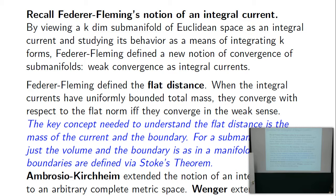We want to apply all this material by taking every pair of Riemannian manifolds, putting them into a common metric space, and measuring a flat distance. But everything Federer-Fleming did was in Euclidean space, which doesn't have enough flexibility. To study metric spaces you need Ambrosio-Kirchheim theory — they define integral currents on complete metric spaces. That's what I'll teach on Tuesday, their theory from beginning to end. Wenger then extended the notion of flat distance to that setting.